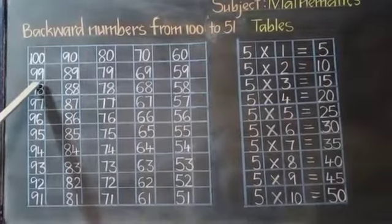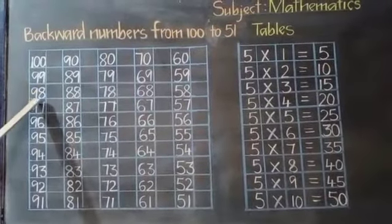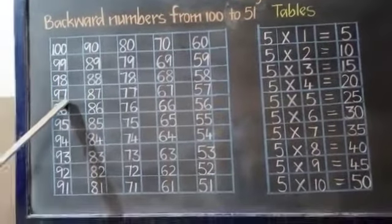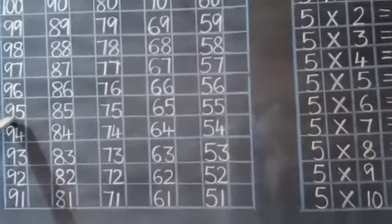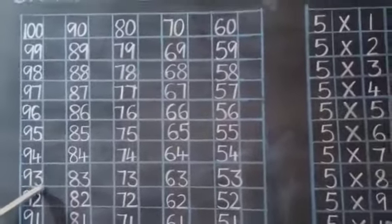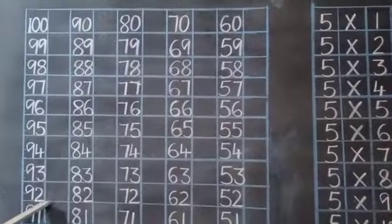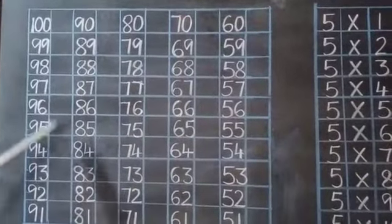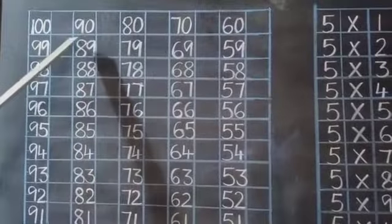100, 99, 98, 97, 96, 95, 94, 93, 92, 91. Skip one column. 90.